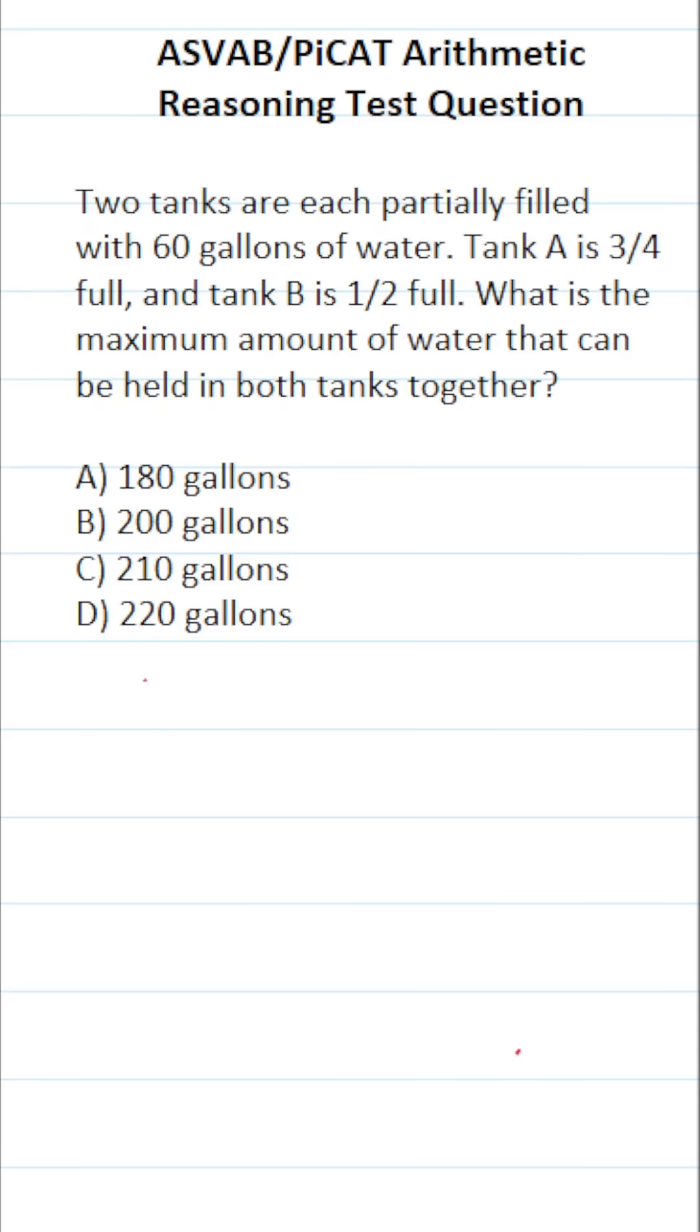So for a problem like this, I'm going to make a quick sketch to help me keep my work organized. We have two tanks that are filled with water, and in each tank there are 60 gallons of water. According to the problem, we know tank A is three-fourths full and tank B is half full.